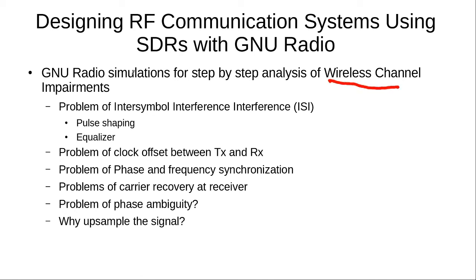Afterwards we will study the wireless channel impairments to which a signal is subjected when transmitted through the wireless channel. We will do GNU Radio simulations and step by step study the problems of inter-symbol interference, clock offset between the transmitter and receiver, phase and frequency synchronization, carrier recovery at the receiver, and phase ambiguity at the receiver — along with solutions to all these problems.